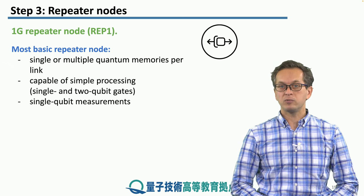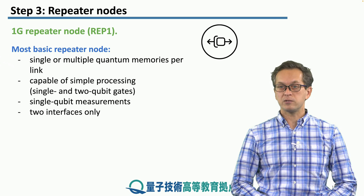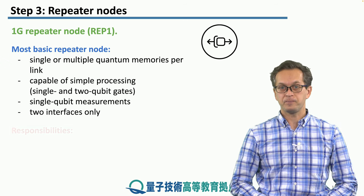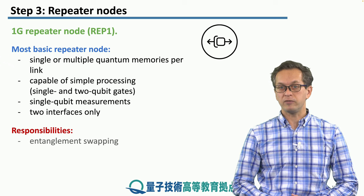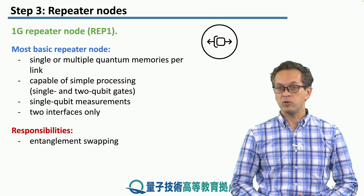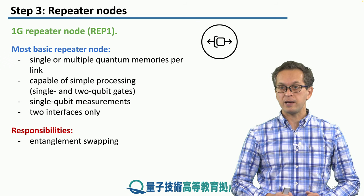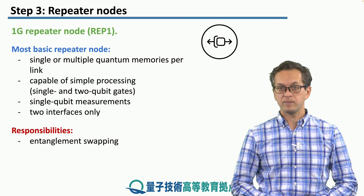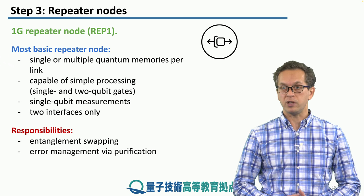The important thing about the 1G repeater node is that it has only two interfaces — one interface connects to a neighbor to the left and one interface connects to the neighbor to the right. The responsibilities of 1G repeater nodes are the following: the node needs to perform entanglement swapping, so splice link-level entanglement into longer distance entanglement.